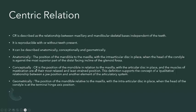Conceptually, centric relation is described as the position of the mandible in relation to the maxilla with the articular disc in place and the muscles of mastication at their most relaxed and least strained position. This definition supports the concept of a qualitative relationship between a jaw position and another element of the articulatory system — the muscles.